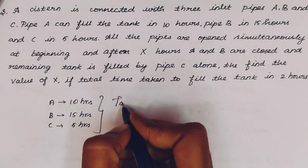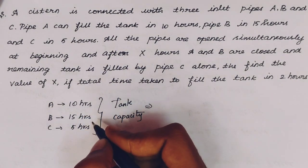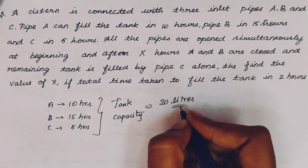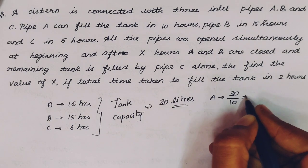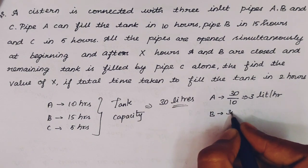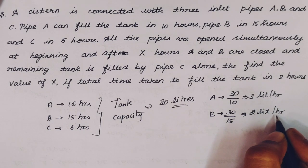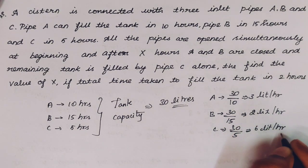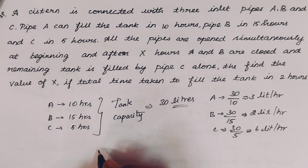The capacity of the tank is LCM of 10, 15 and 5, which is 30 liters. Individual pipe efficiencies: A fills 30 divided by 10 equals 3 liters per hour. B fills 30 divided by 15 equals 2 liters per hour. C fills 30 divided by 5 equals 6 liters per hour.